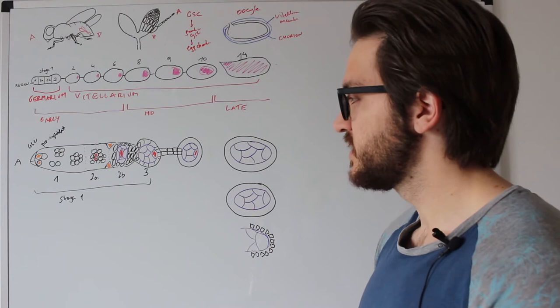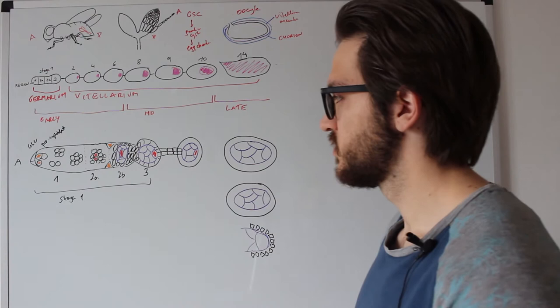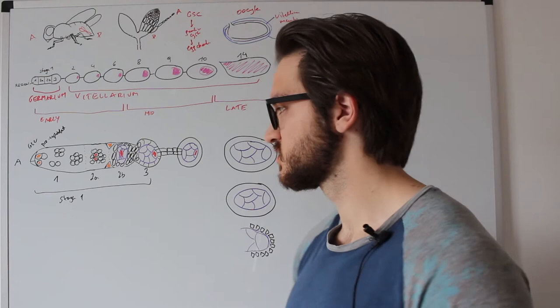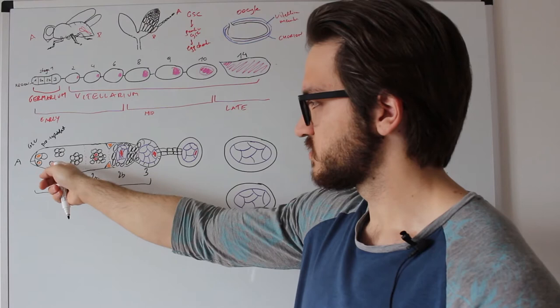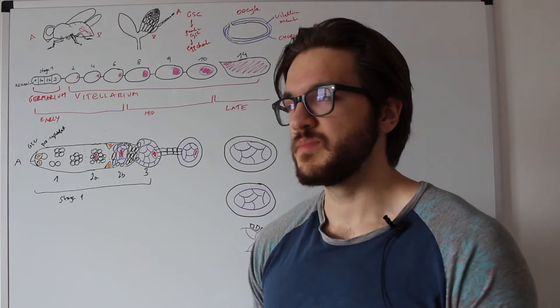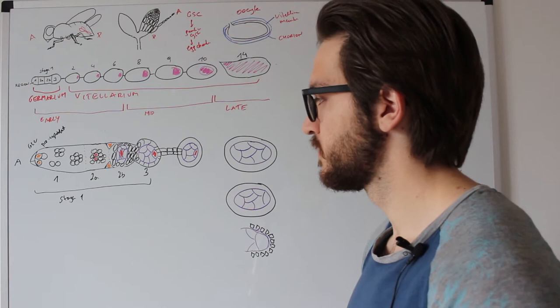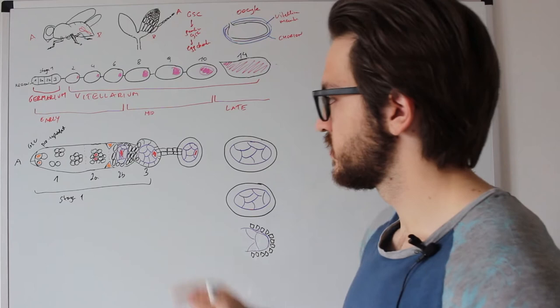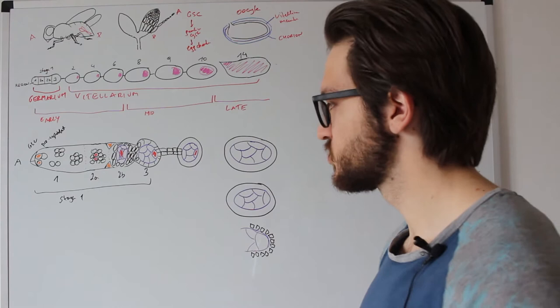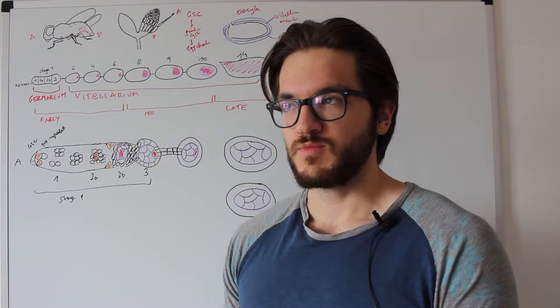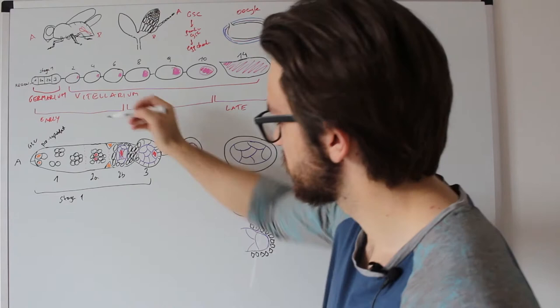What is also special about these four mitotic divisions is that they are incomplete. That means that usually when a cell divides, there is a contractile ring which contracts and will pinch off two cells so they are not connected. But when the pro-cystoblast divides, the contractile ring will not contract fully, and leaves a bridge, or tunnel, or connection between the two cells. We call that the cytoplasmic bridge, or ring canal. So these two cells are connected, the four cells are connected, the eight and sixteen cells are also connected, resulting in one continuous cytoplasm, which you could call a syncytium.